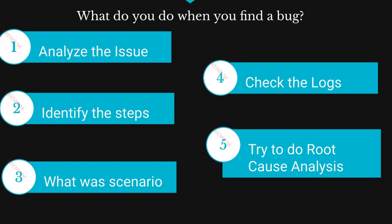First of all, you have to analyze the issue — and this applies to your career as well, not just for interview purposes. It might have happened that you performed some wrong steps and that is why the end result is not the expected one. So first analyze the issue, identify the scenario, identify the steps behind the issue. What was the flow? What was the test case? What was the exact step of the bug?